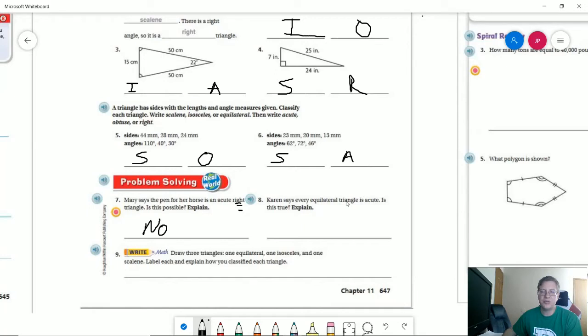Karen says every equilateral triangle is acute. Is this true? It has to be because one of the things that changes the angles is the length of the sides. So if we have three sides of the same length, regardless of how long they are, they are all going to be in the same proportion to each other, which means we are going to have the same angle, which should be 60 degrees for each. So yes.